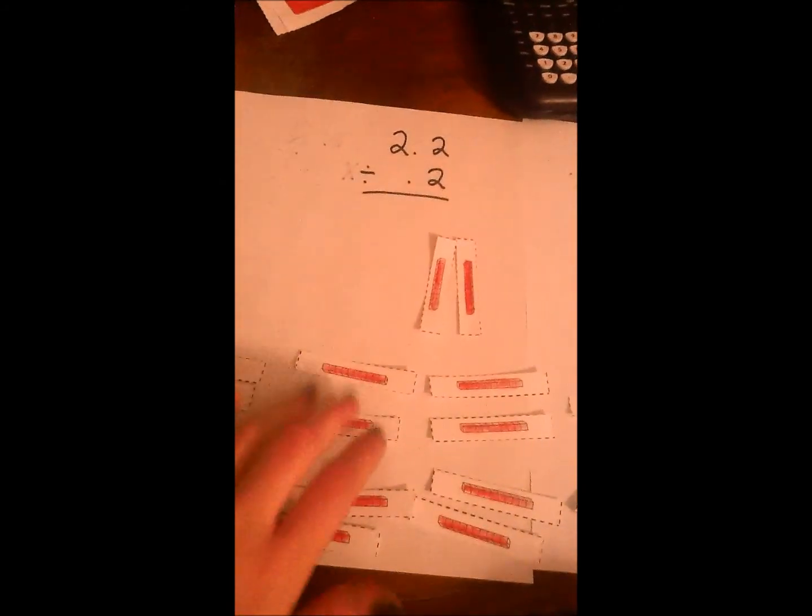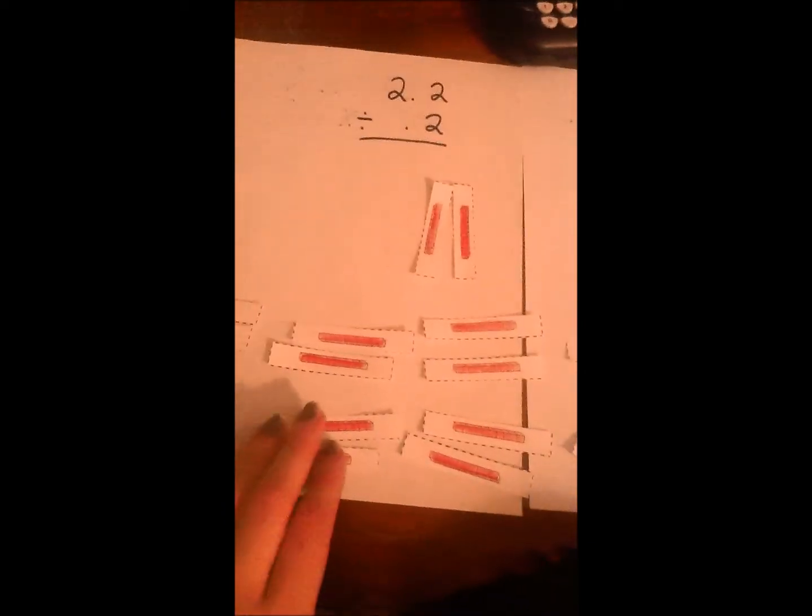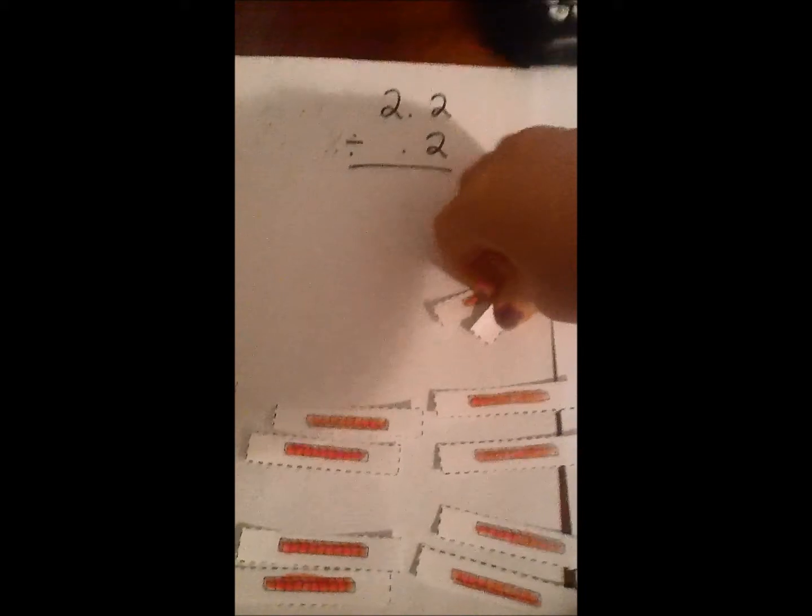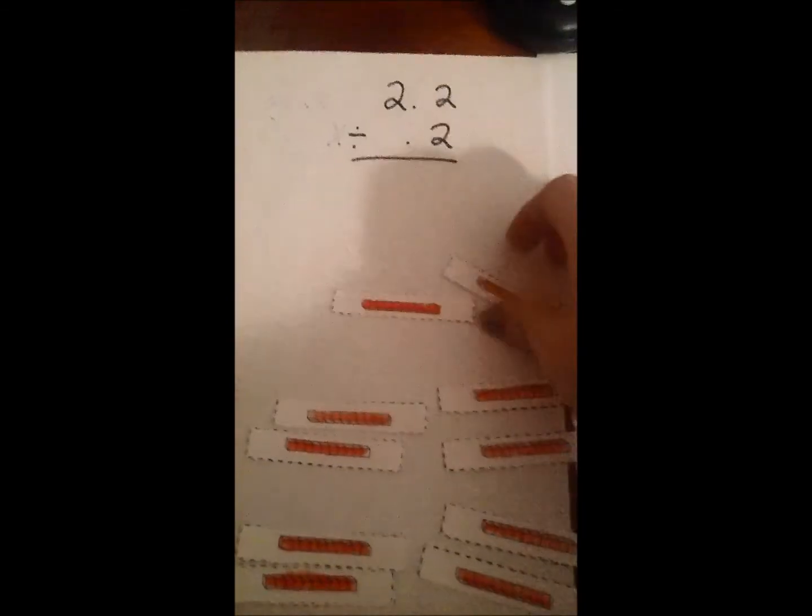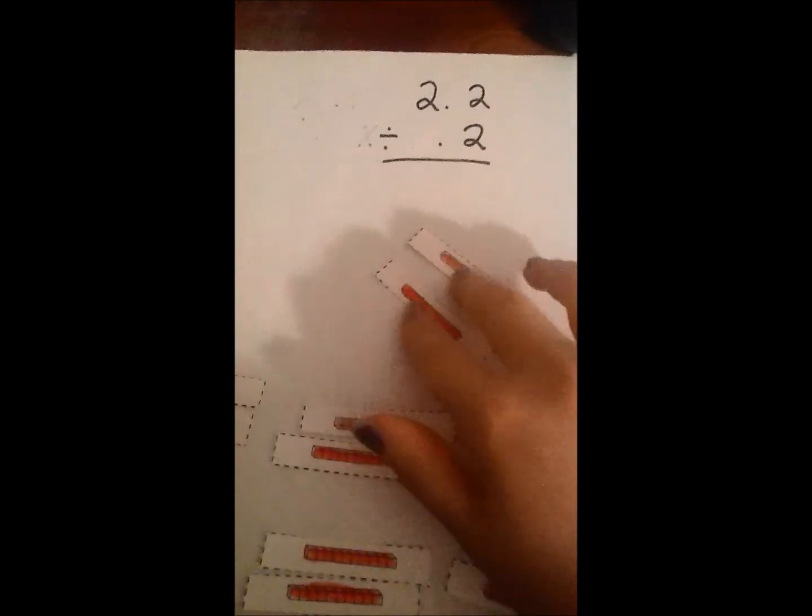So these are in groups of 2 to show the division of 0.2, and we have 11 groups of 0.2, including this one. So there are 11 groups of 0.2, so our answer is 11.